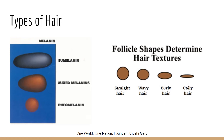Lighter hair may not have a medulla at all, and gray hair may have holes in the cortex. There are actually two different kinds of melanin that determine whether you have light or dark hair. Melanin is also found in the skin and gives the skin pigment as well. The two types are eumelanin and pheomelanin — eumelanin is associated with dark hair such as black or brown, while pheomelanin is associated with lighter hair such as red.